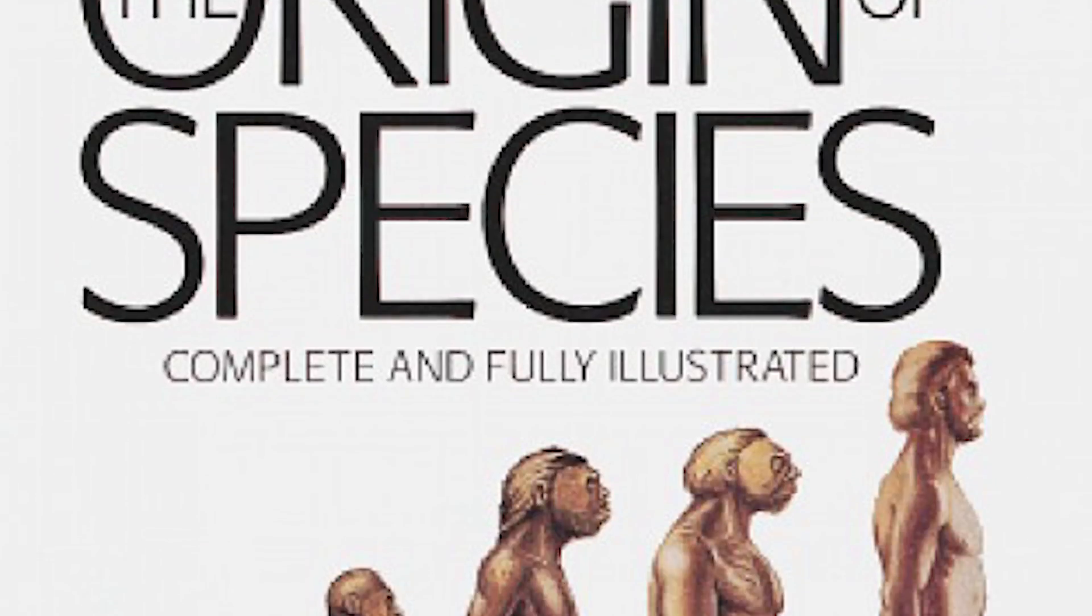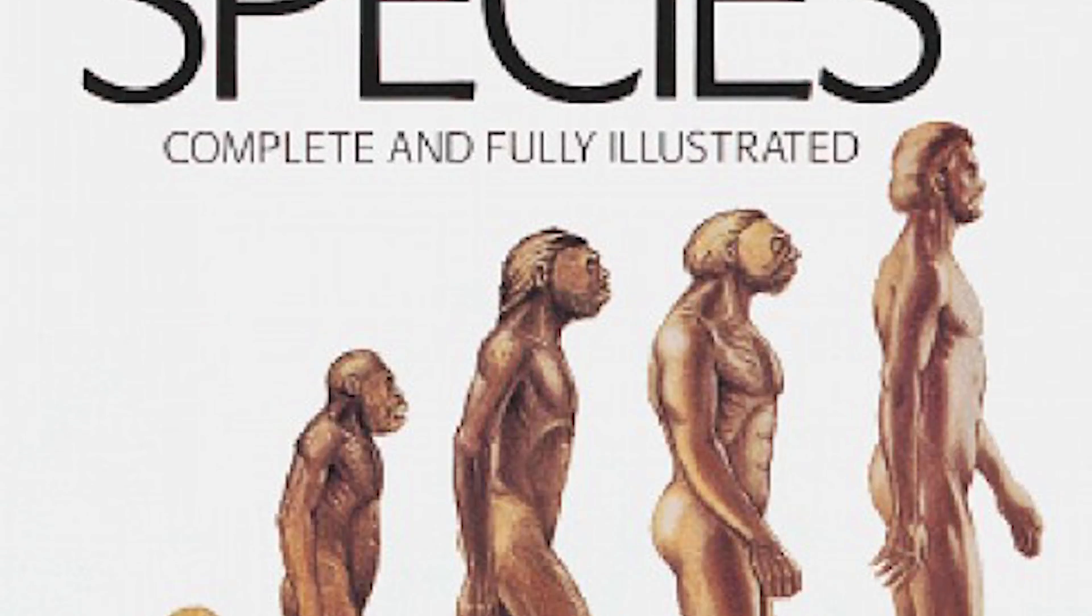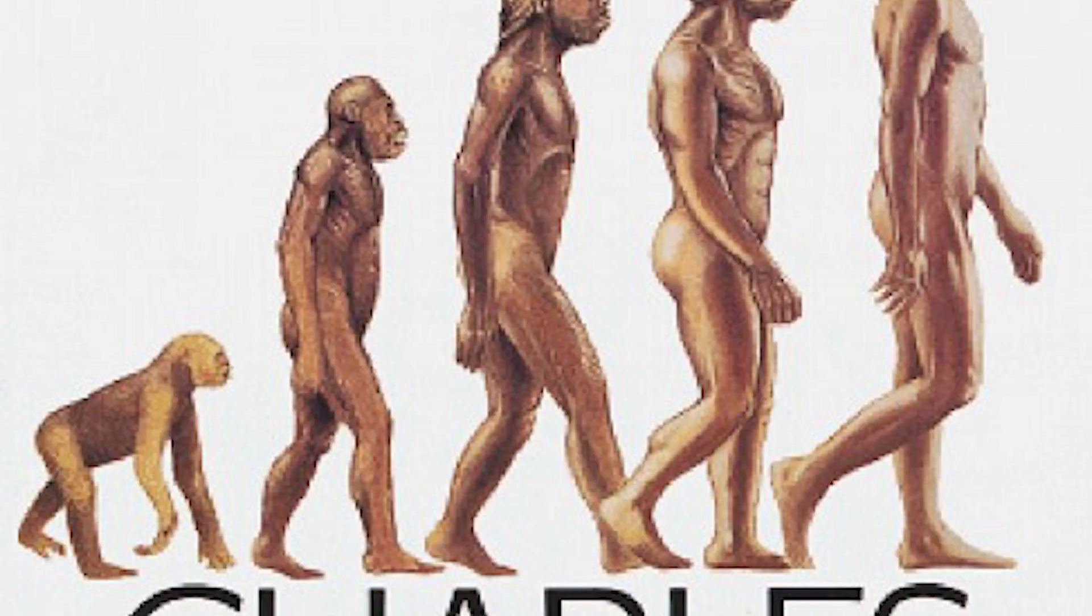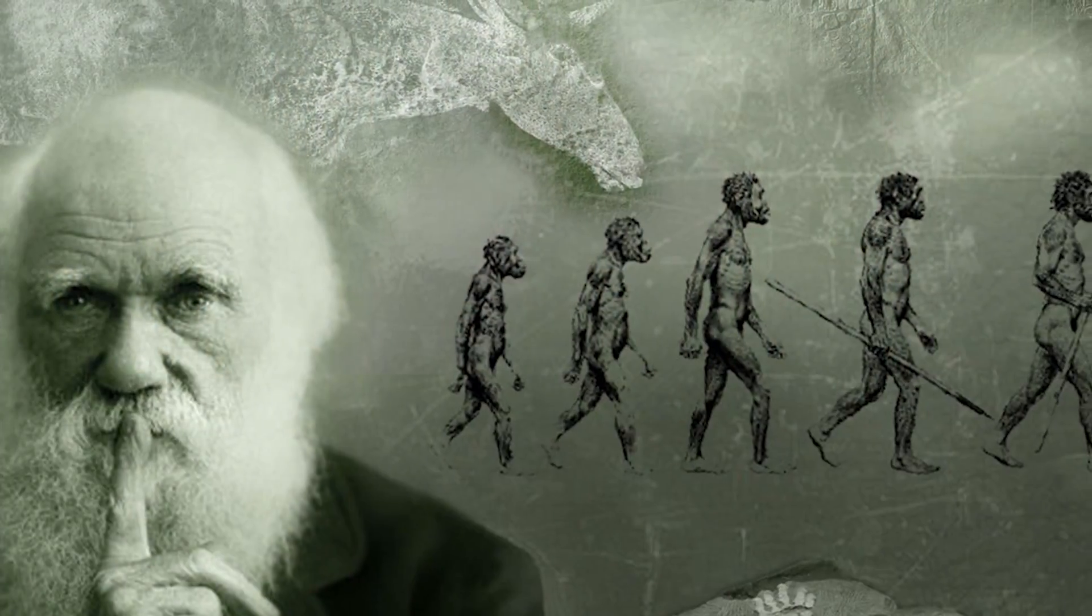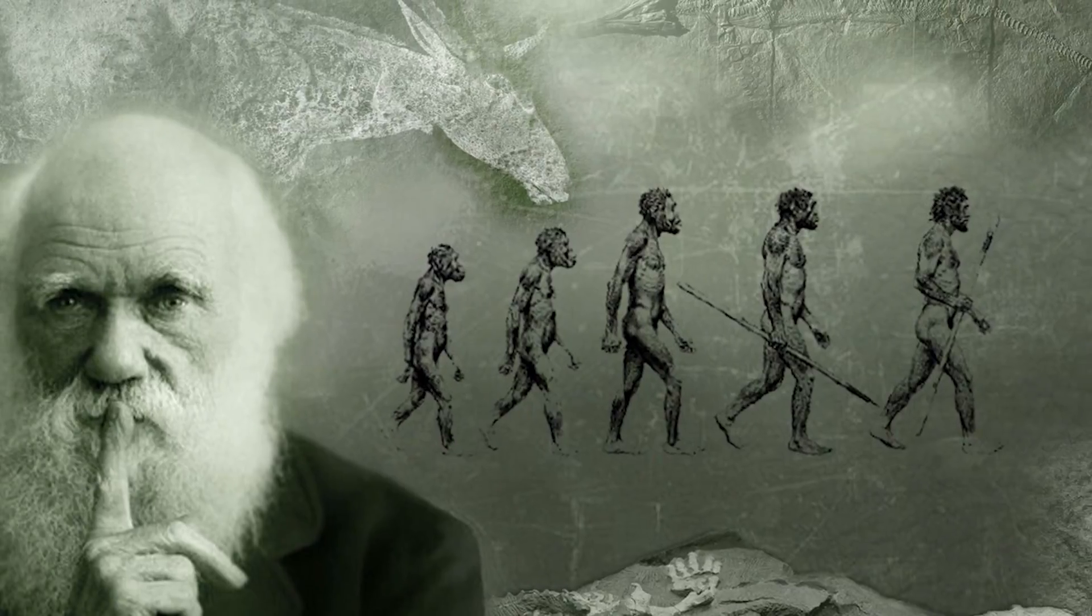Darwin knew that there was a sleeping monster in The Origin of Species in a chapter devoted to the laws of variation. In the first paragraph of this chapter, he wrote, I have hitherto spoken as if the variations were due to chance. This, of course, is a wholly incorrect expression, but it serves to plainly acknowledge our ignorance of the cause of each particular variation.